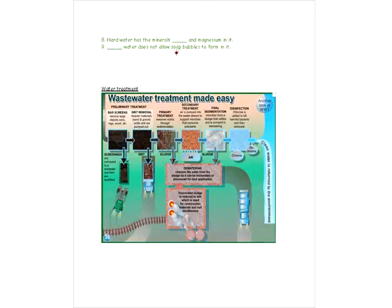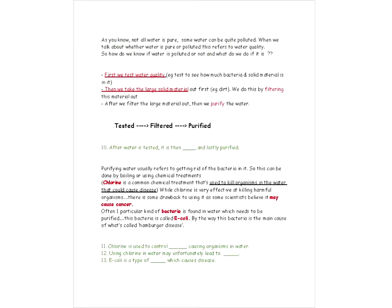Now we're going to talk about water treatment. The early steps involve filtering out larger and larger amounts of sediment — filtration happens first. First you test the water and see what it's like, then you filter it, and after that you purify or disinfect it. Chlorine is used in the purification step. So the three steps are: test, filter, purify.